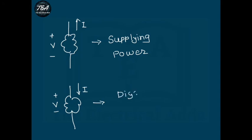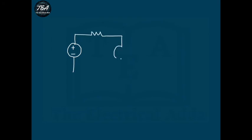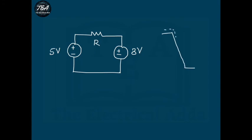If current flows into the positive terminal of an element, that element is dissipating power. Let's take an example to understand this clearly. We have two voltage sources — a 5-volt source and a 3-volt source — connected by a resistor R. Current flows from higher potential to lower potential (like water flowing from higher to lower elevation), so current flows in the clockwise direction, causing a potential drop V_R across the resistor.